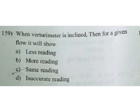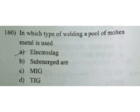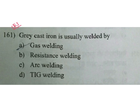In which type of welding is a pool of molten metal used? Electro-slag welding. This is also an IES question — previous IES question. Gray cast iron is usually welded by gas welding.